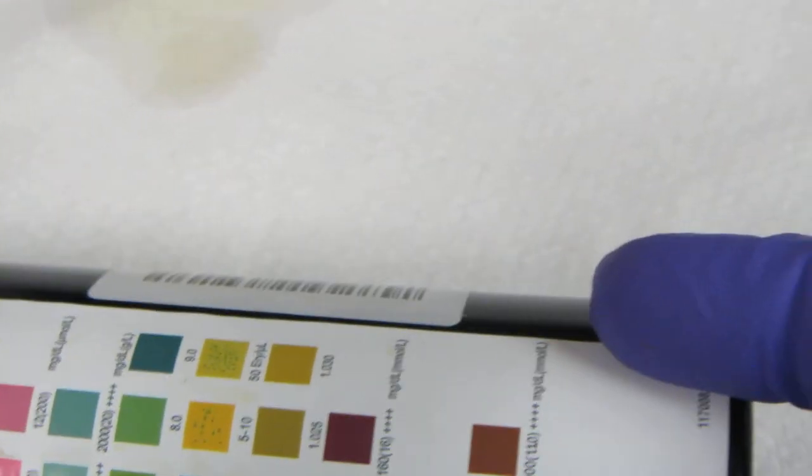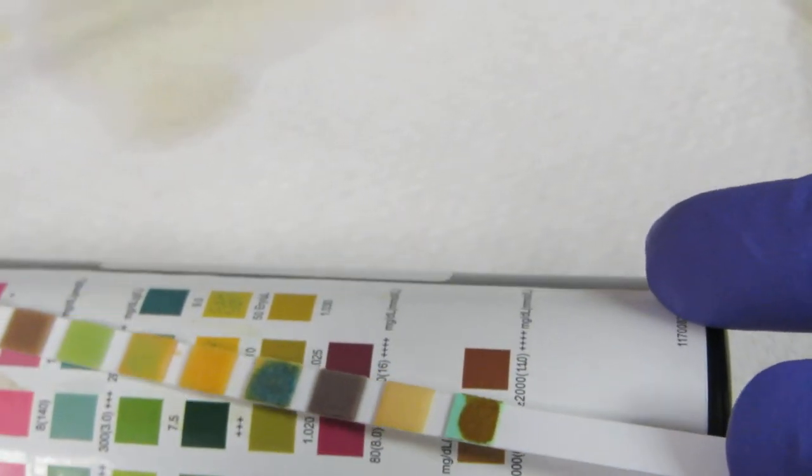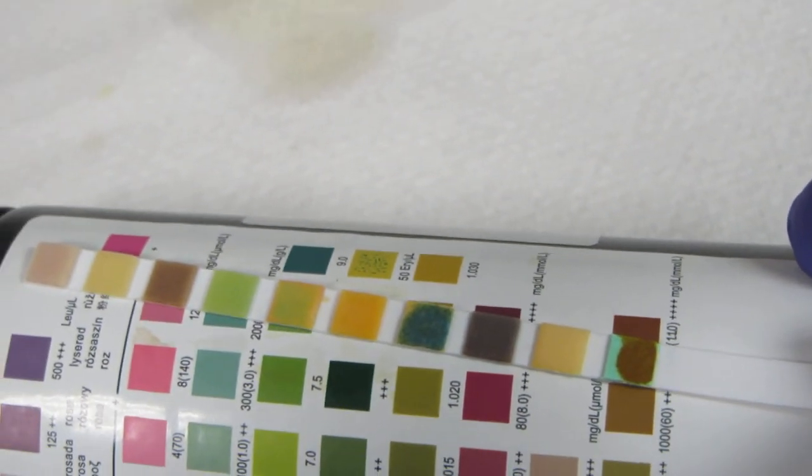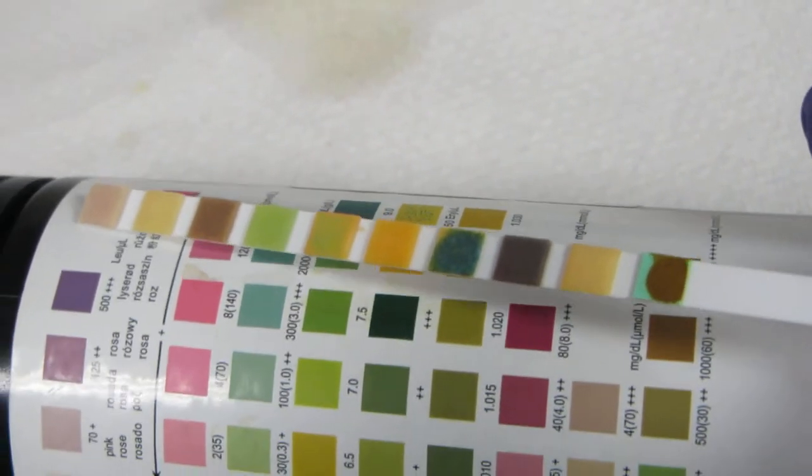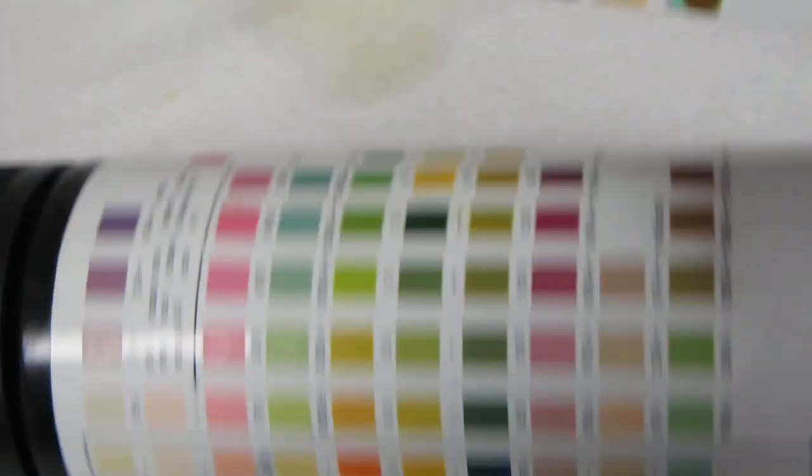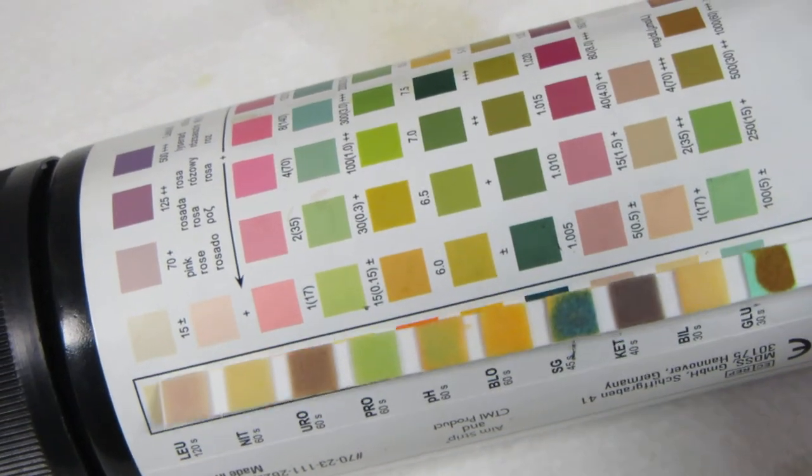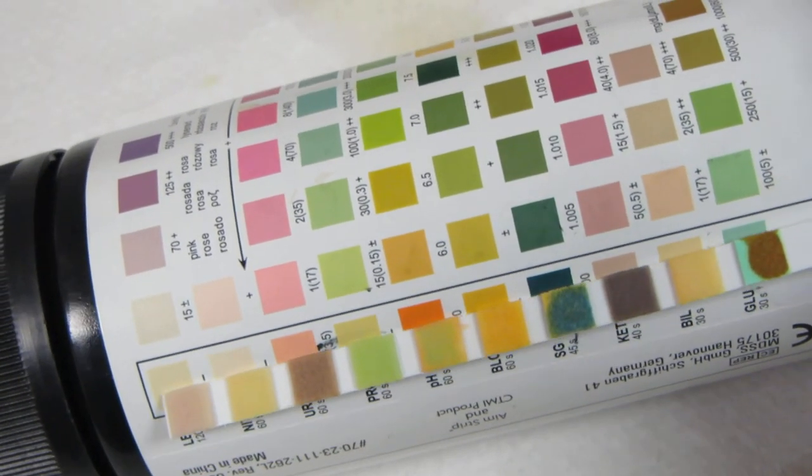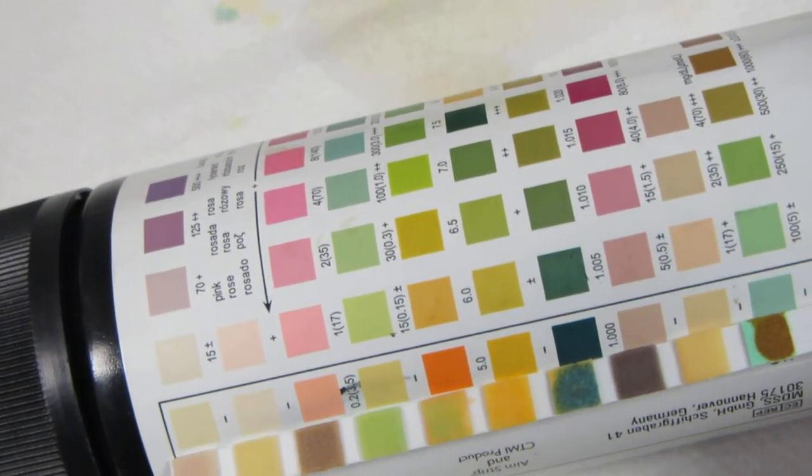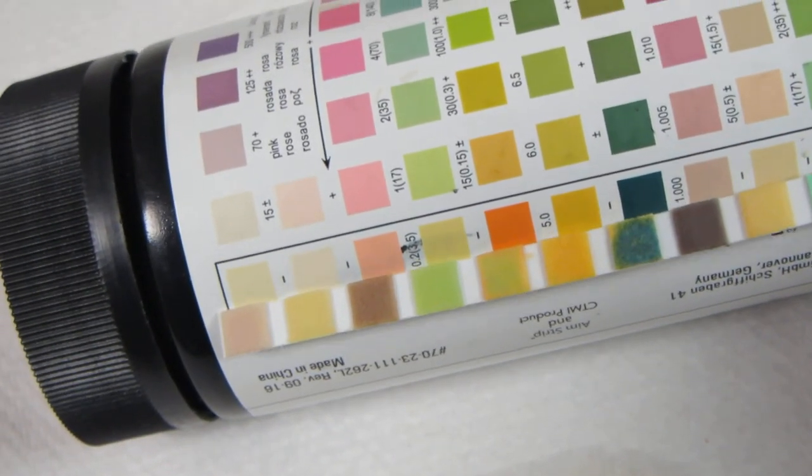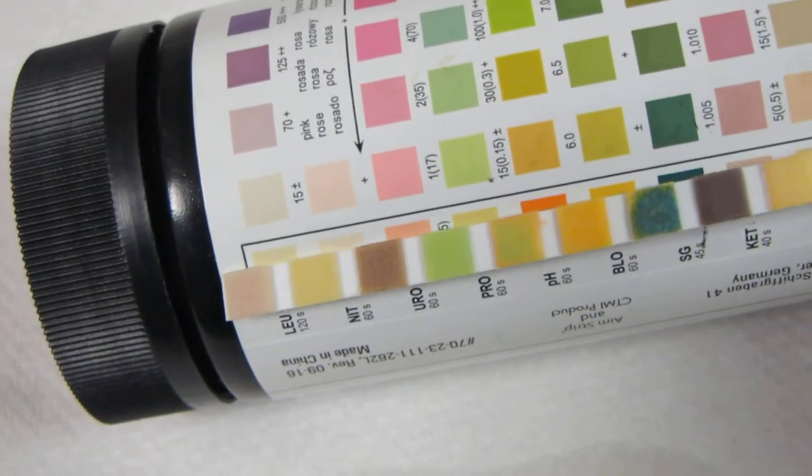But when we go ahead and look at our sugar, we see that this patient has the largest amount of sugar possible. We're going to call it four plus. The good news is that we have no bilirubin. Like I said, the ketone is invalid. So we're going to make believe we can't check that. Specific gravity for this person is the darkest. So it's at basically 1.000.